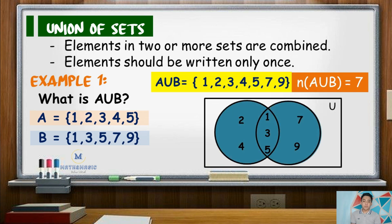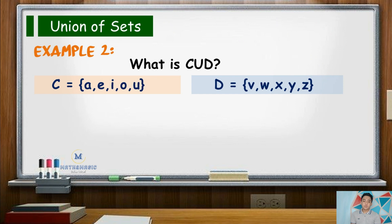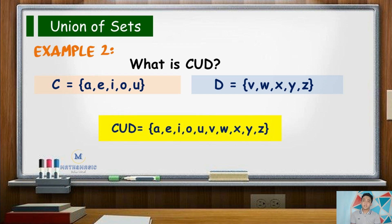For our second example, find C union D. If set C has the elements A, E, I, O, and U — or the vowel letters in the English alphabet — while set D contains the elements V, W, X, Y, and Z — or the last five letters in the English alphabet. Here, since there is no common element, we will simply write all the elements. Hence, C union D has the elements A, E, I, O, U, V, W, X, Y, and Z. Its cardinality is 10.